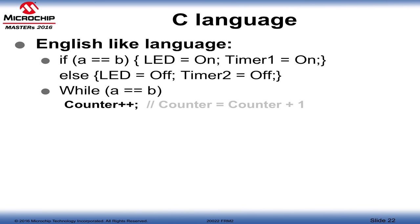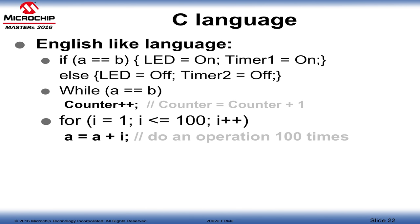Here's a while loop: while the value in A equals the value in B, increment a counter — counter equals counter plus 1. And here's a for loop: for i equals 1, i less than or equal to 100, increment i — this repeats an operation 100 times. So the expression A equals A plus i is executed 100 times using the for statement.